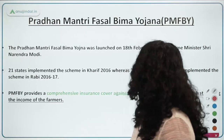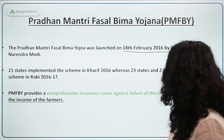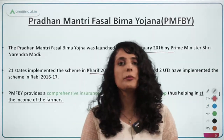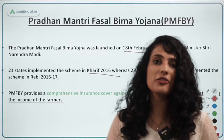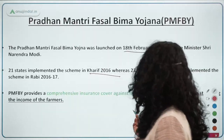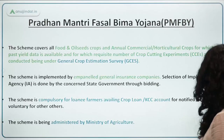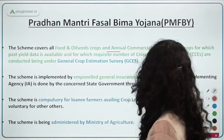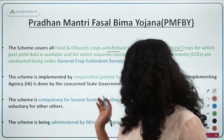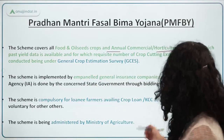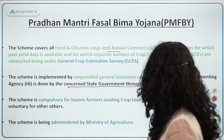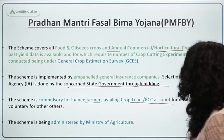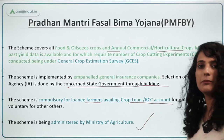Pradhan Mantri Fasal Bima Yojana was launched on February 18th. 21 states implement the scheme for both Kharif and Rabi seasons. It is a comprehensive insurance cover against the failure of crops — covering food and oilseed crops for which MSP is released. The implementing agency is selected by state governments through bidding. The scheme is compulsory for loanee farmers availing crop loans and KCC accounts, and it is administered by the Ministry of Agriculture.